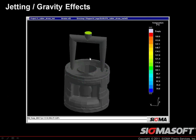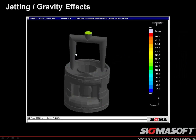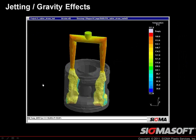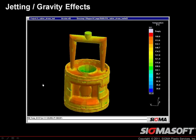Here's a quick example of jetting and gravity effects. These might seem simple or obvious, but simulation has struggled to capture things such as jetting based on element technology. In this case you can see the jetting as it shoots way down to the bottom and then backfills up through the part — in this case a thermostat.